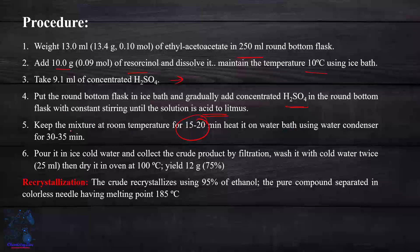Use the condenser for 30-35 minutes. Pour it into cold water and collect the crude product by filtration. Wash the product with cold water twice, 25 ml each time, then dry in oven at 100°C. Yield is 12 grams, about 75%. Recrystallization using 95% ethanol gives pure compound as colorless needles with melting point 185°C.